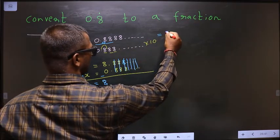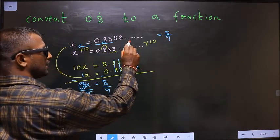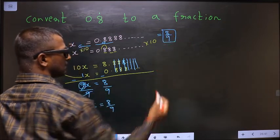So this equals 8 by 9. Thus I have converted recurring decimal into a fraction. And this is our answer.